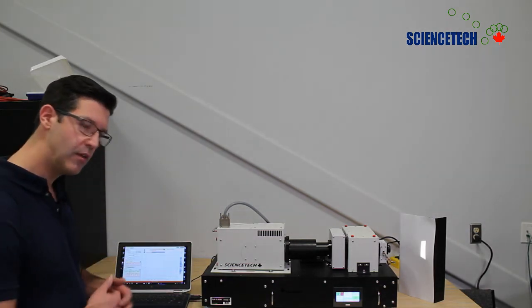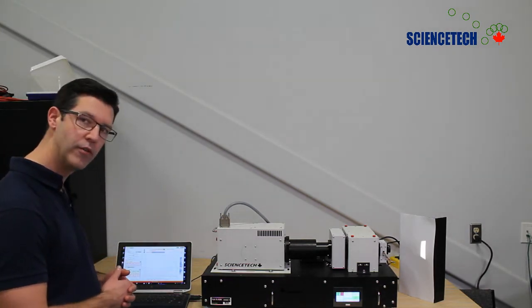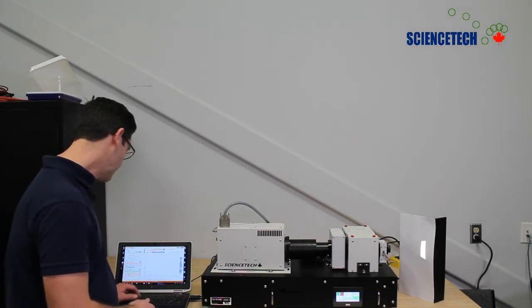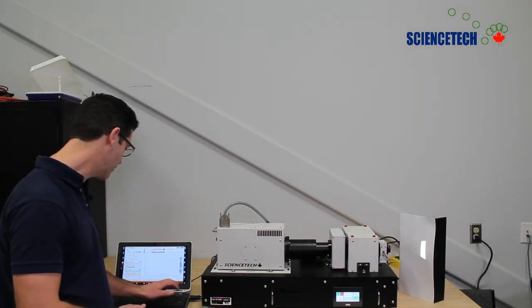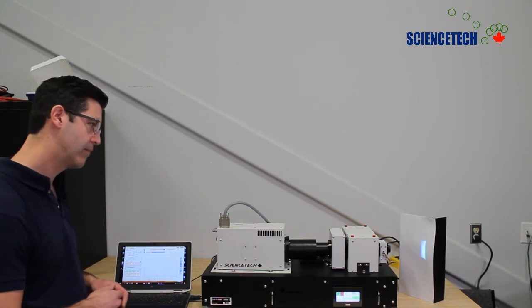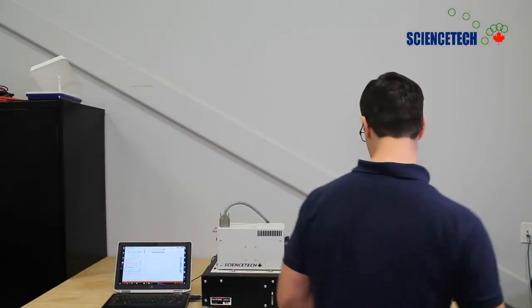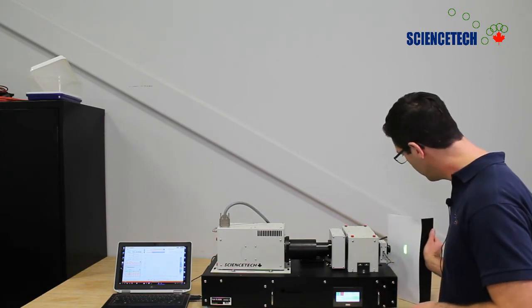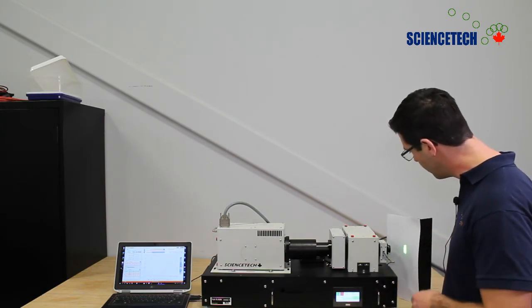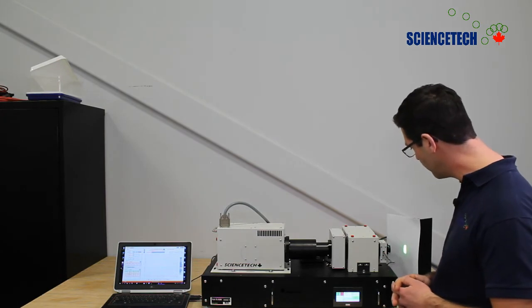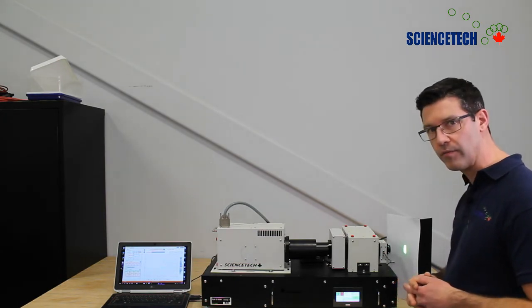So I'm just going to turn the monochromator over to a green wavelength. Let's try 550 nanometers. Alright, let's take a look at what it looks like. Over here you can see we have a nice bright, fairly uniform spot of light coming out of this system.